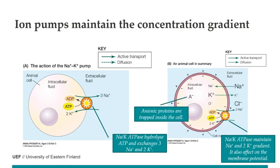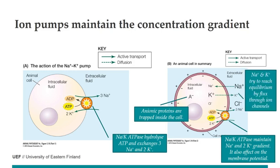Inside the cell there are anions and proteins that usually carry a negative charge and are trapped, affecting the membrane potential slightly. Sodium and potassium also try to reach equilibrium by flux through ion channels, and they are the major contributors to the membrane potential.